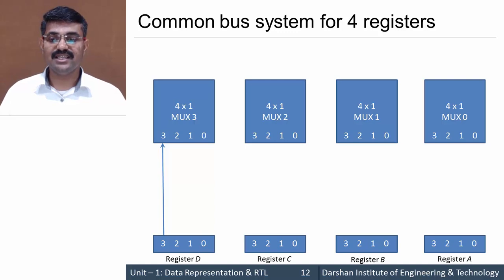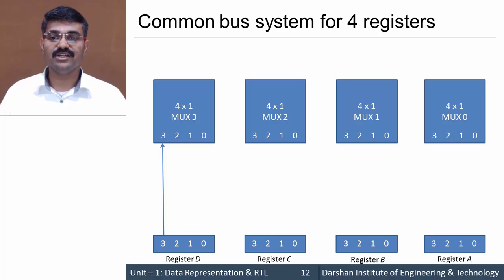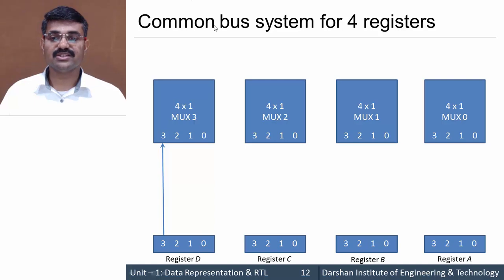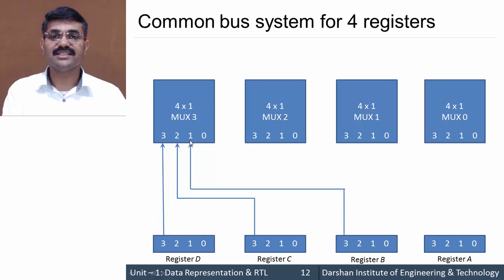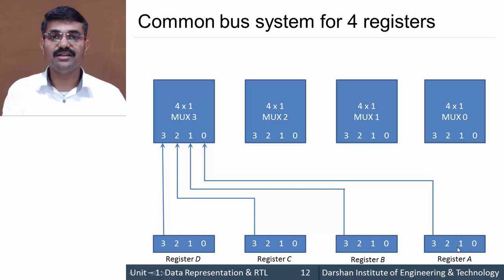As you can see, one line from Register D — that is bit 3 — is connected to Multiplexer 3's third input line. Line 2 of Multiplexer 3 is connected to the third bit of Register C. Line 1 is connected to the third bit of Register B, and Line 0 is connected to the third bit of Register A. So all individual registers' third bits are connected to MUX 3's inputs.